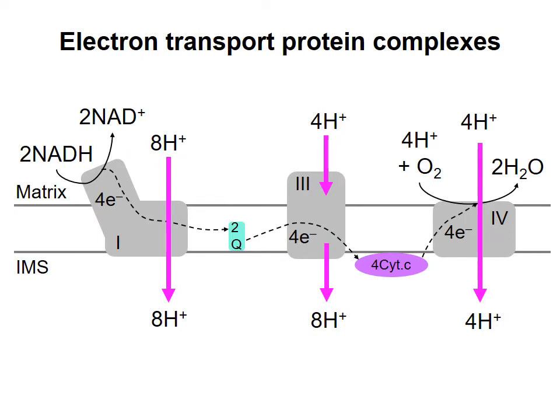This diagram shows in more detail the process of moving electrons from NADH to oxygen. The gray shapes represent large protein complexes embedded in the inner mitochondrial membrane. NADH gives electrons to cofactors in the first complex, complex 1, which ultimately moves them to coenzyme Q in the membrane.